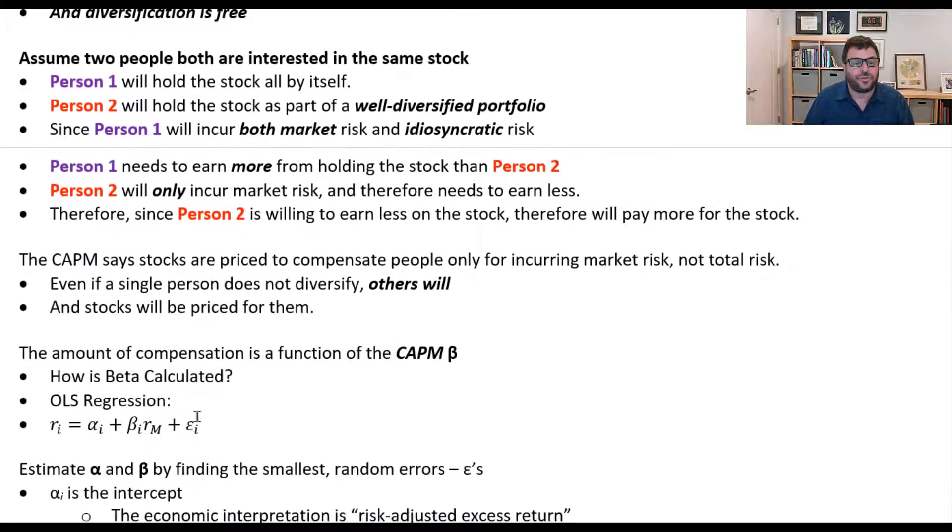So let's just talk through this very quickly. Assume two people are both interested in the same stock and the first person will hold the stock all by itself. They're going to hold just that particular stock. But person two will hold the stock as part of a well-diversified portfolio. Since person one, since they're holding a single stock, they're going to incur both market risk and idiosyncratic risk.